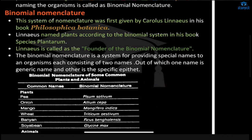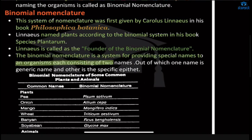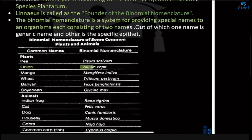Binomial nomenclature is a system for providing special names to organisms consisting of two names. For example, onion is Allium cepa, pea is Pisum sativum, and banyan is Ficus bengalensis. The two names are genus and species — the first name is the genus and the second is the specific epithet. That is how we give a scientific name to a particular species and nomenclate each one.